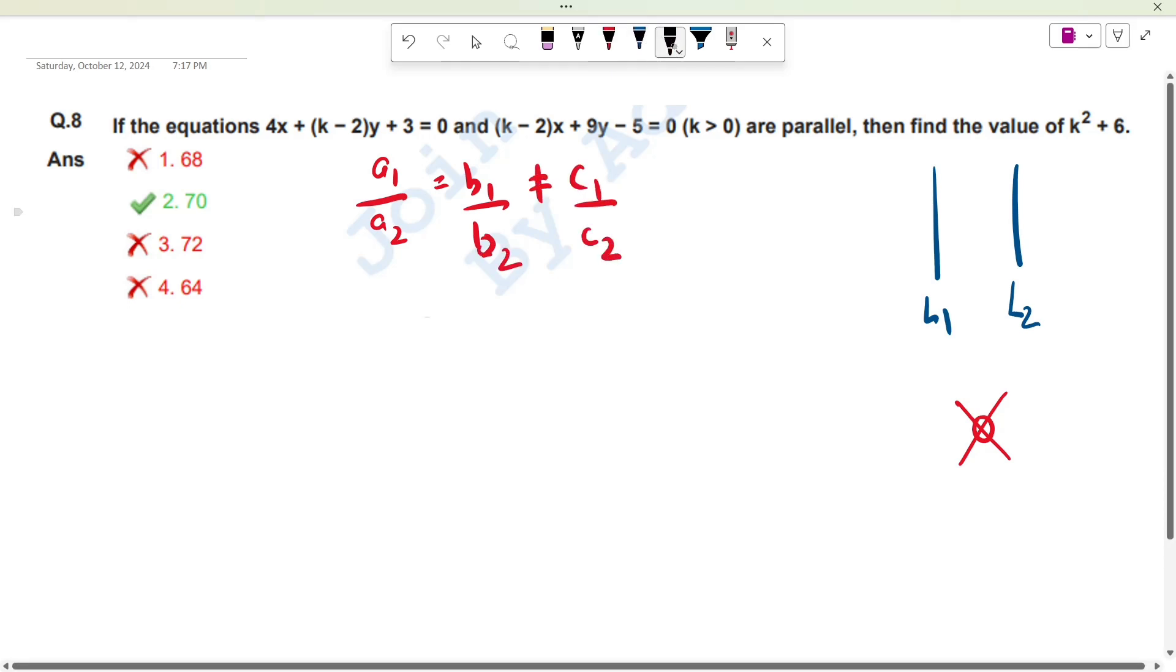Now what are these B1 and A1? The first equation is 4x plus k minus 2 into y is equal to minus 3. And what is our second equation? k minus 2 into x plus 9y is equal to 5.